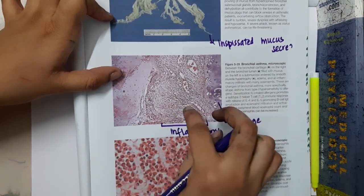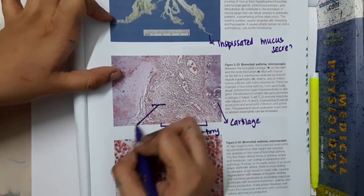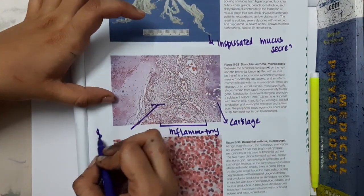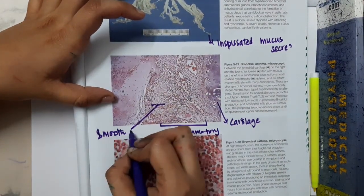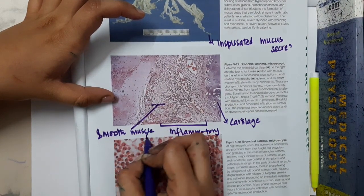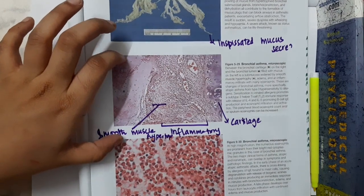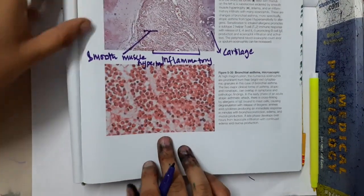Here, all the inflammatory cells are present, and you can see that there are increased smooth muscles. There is smooth muscle hypertrophy. Smooth muscle hypertrophy occurs in bronchial asthma patients.